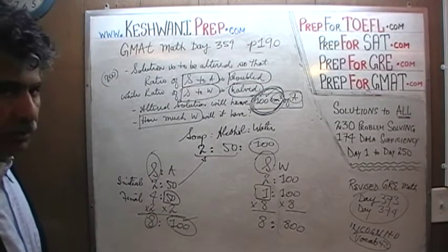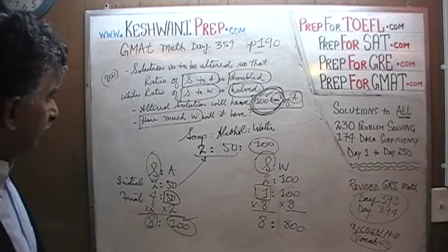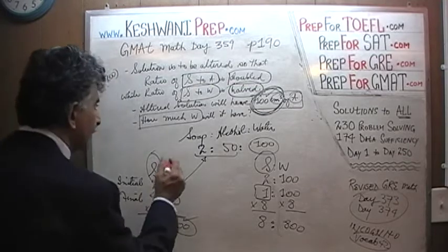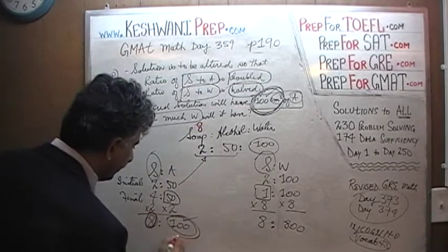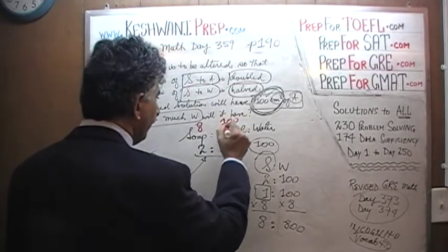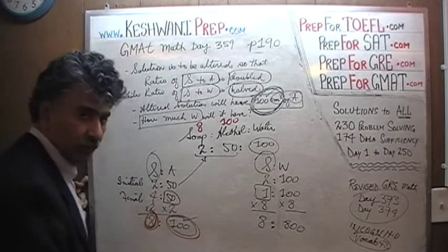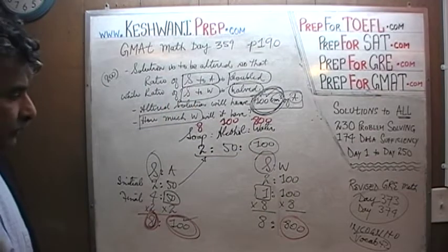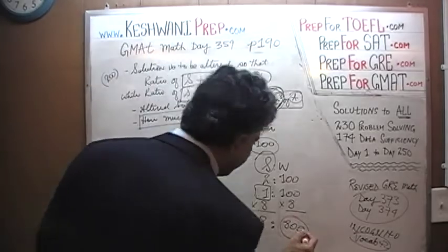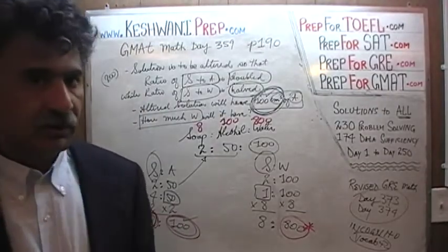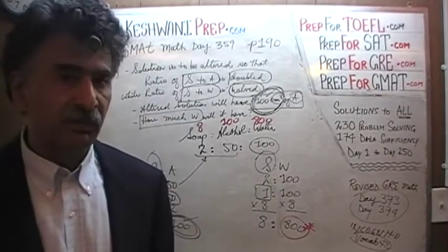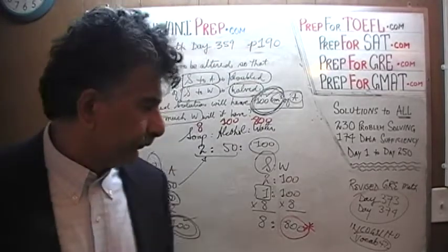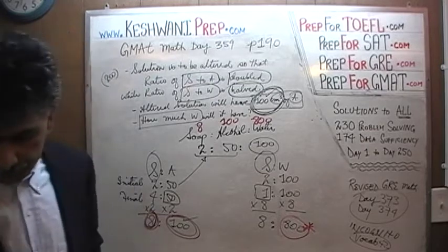Our new solution has 8 of soap, 100 cubic centimeters of alcohol just as we were told, and 8 units of soap require 800 units of water. That's all — we are done. The question was how much water do we have, and the answer is 800 units of water, whatever the units happen to be. I think they are using cubic centimeters, but units play no role here. We need 800 units of water.